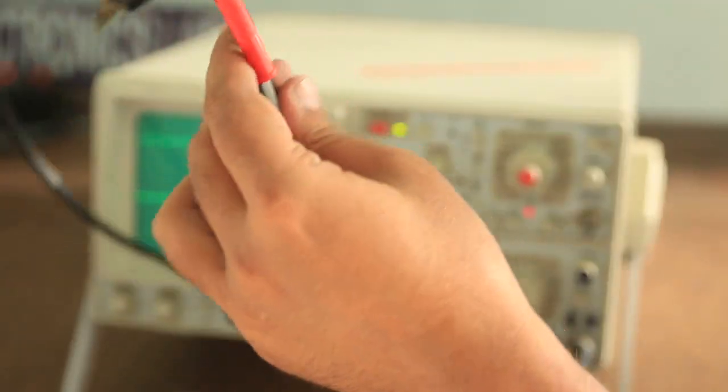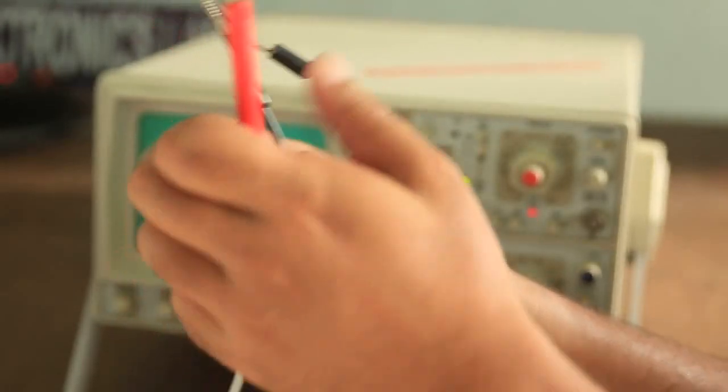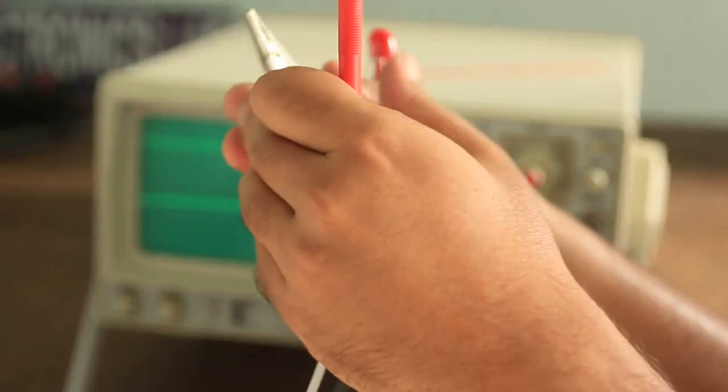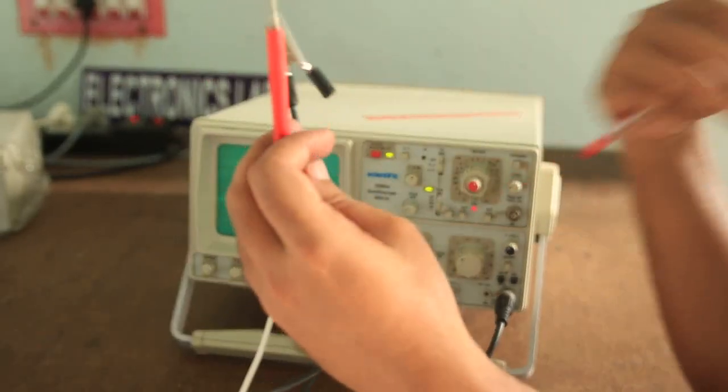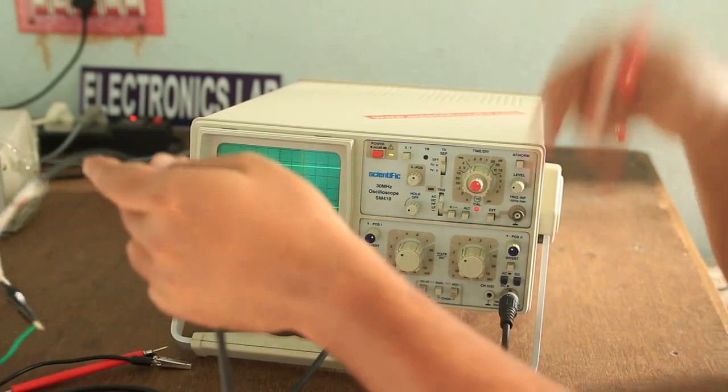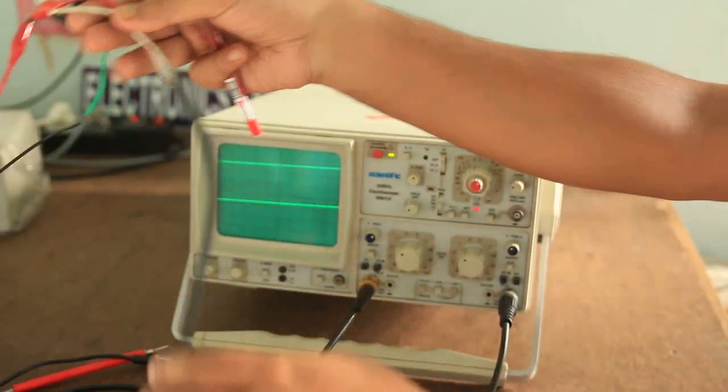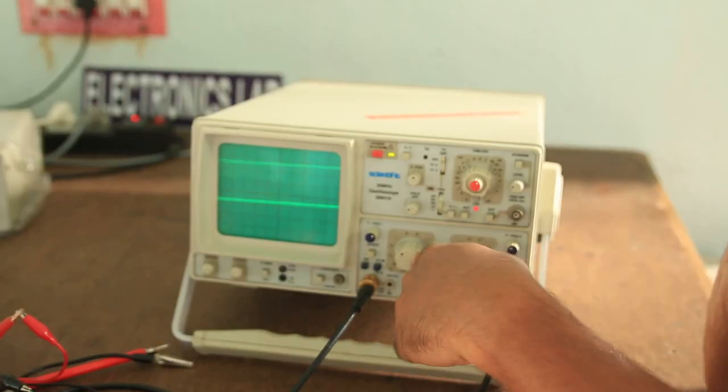As you can see from here, we have taken a channel from where a red and the black two ends - this is the positive and this is the negative end. Similarly, one can use for the channel 2. What are the knobs? Let's see.